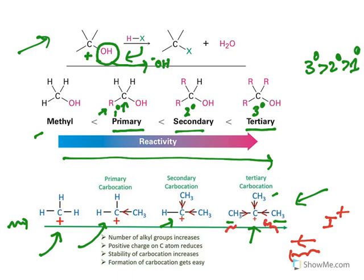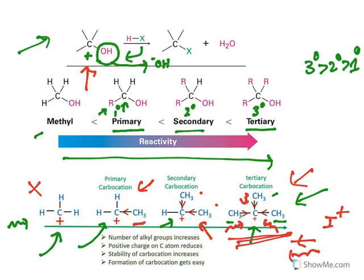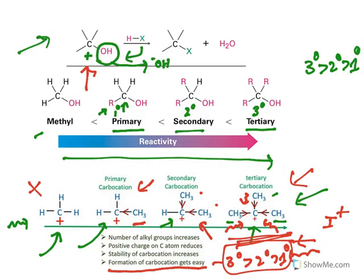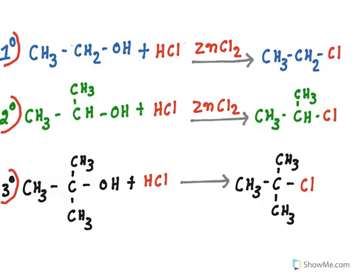In secondary carbocations only two methyl groups stabilize, and in primary only one, so they are less stable and form less readily. Methyl carbocations have no stabilizing group at all and are not formed. Formation of carbocation is easiest for tertiary, then secondary, then primary. So the reactivity order with halogen acids is: tertiary > secondary > primary > methyl.